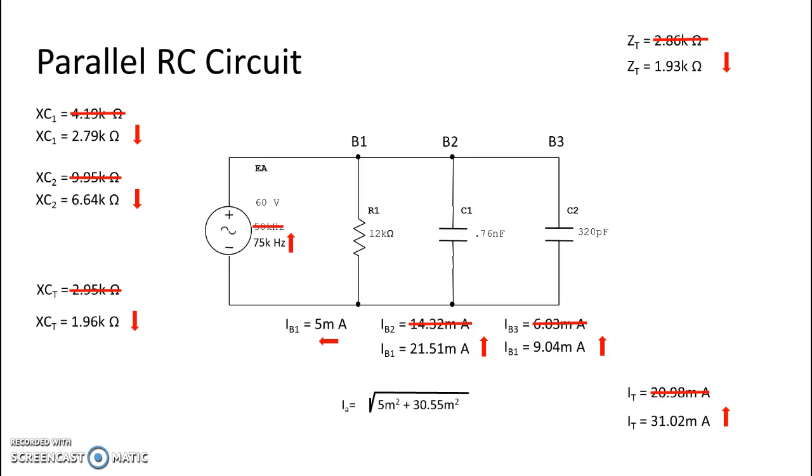Again, you can add those two currents through your capacitors together, and we get 30.55 milliamps. If we square that, and then we take 5 milliamps squared and square root the whole thing, we come within hundredths of our total current of 31.02 milliamps, and we did it correctly.